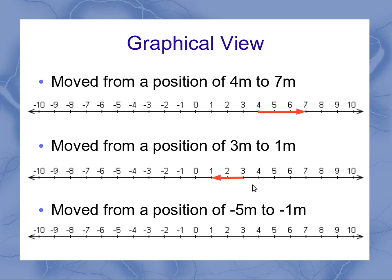Remember, positions can be negative. So our displacements can involve negative positions as well. And if I'm moving from minus 5 meters to minus 1 meter, I could show that as an arrow along the number line.